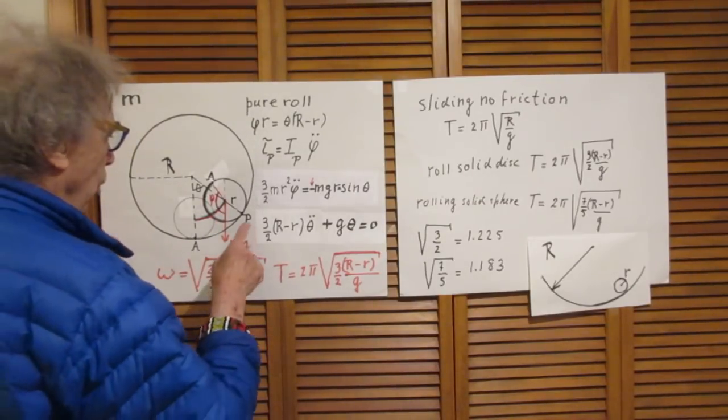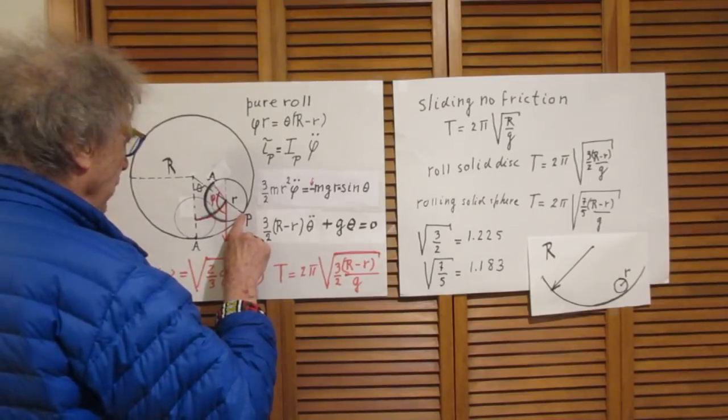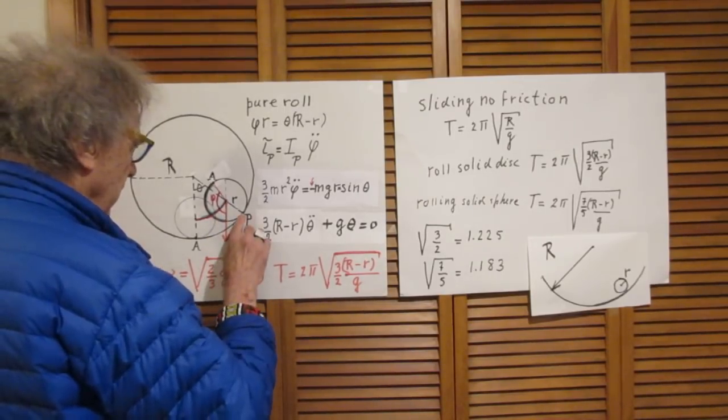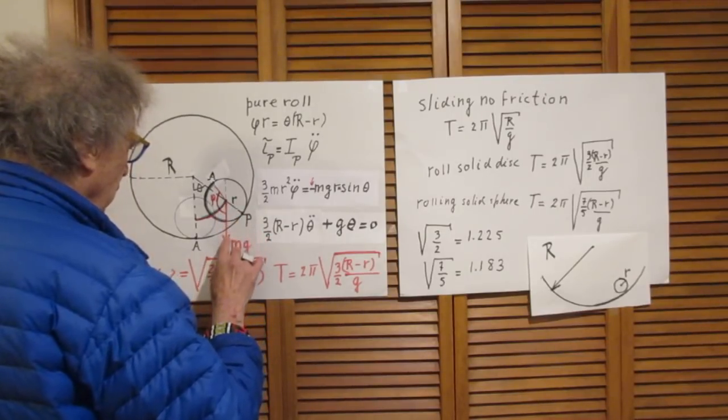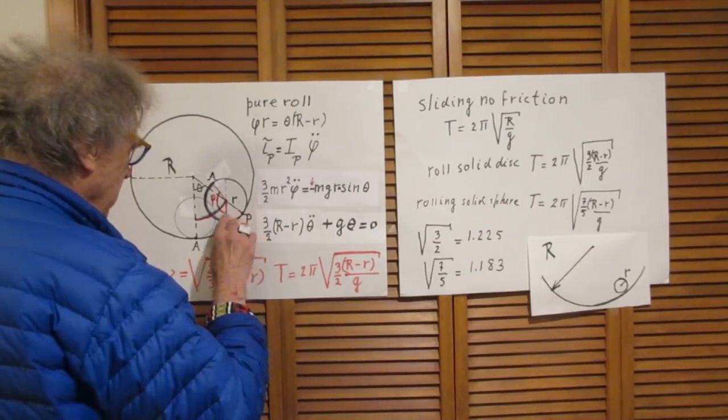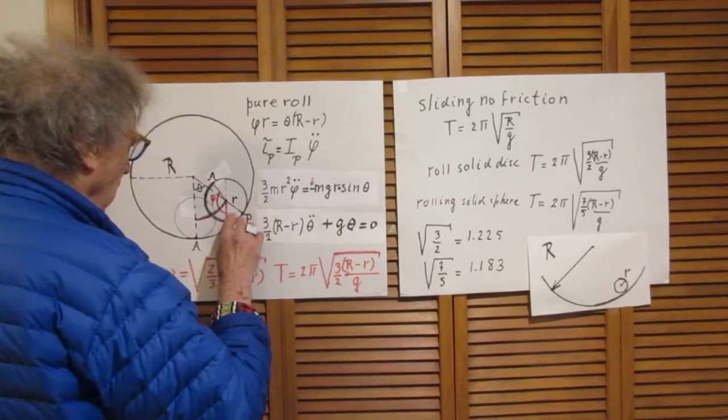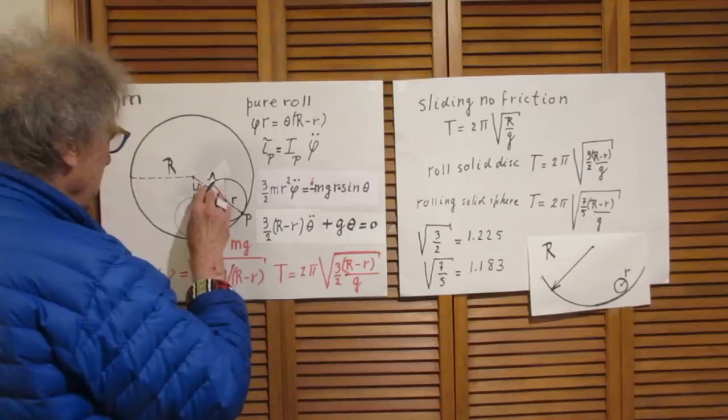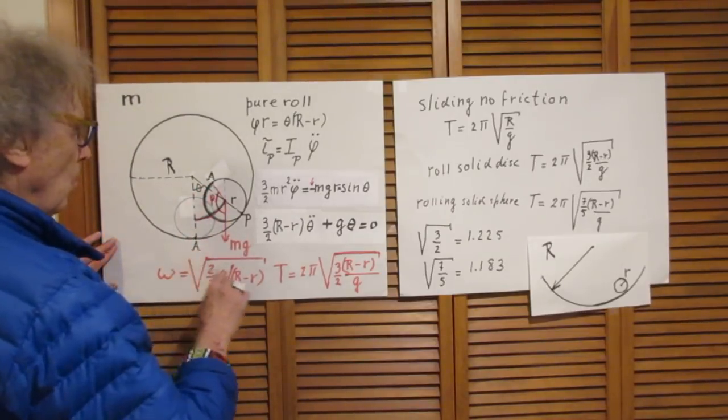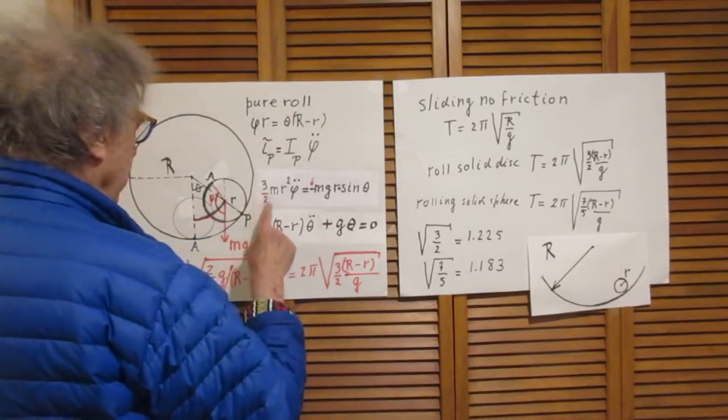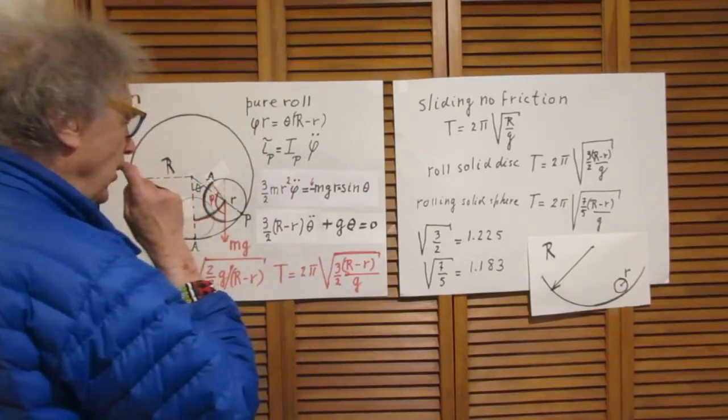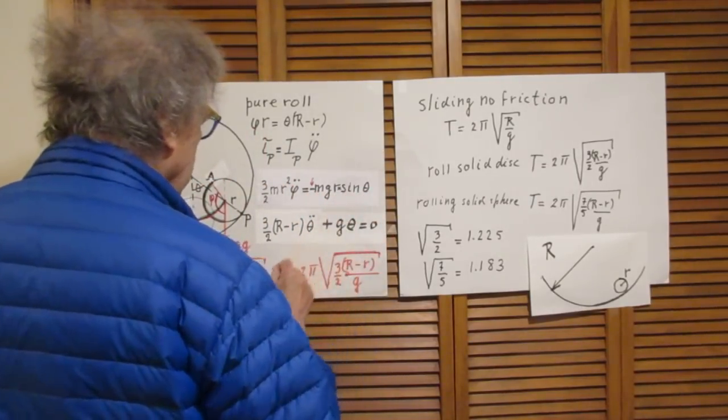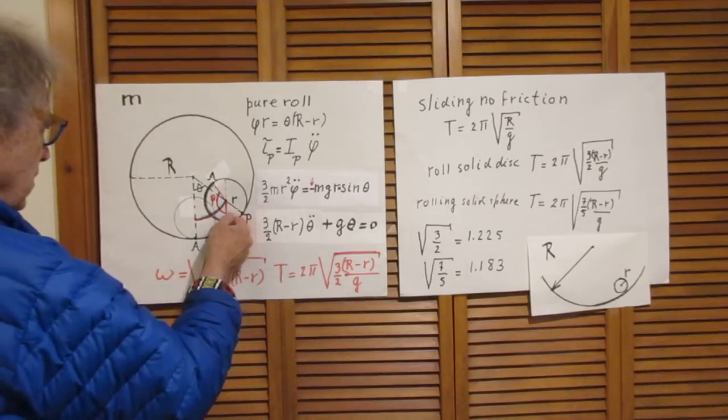The only force for which the torque is nonzero is mg. The magnitude is this force times the distance from p to this force, and that distance is r sin theta, because this angle is theta. So we see that 3 halves mr squared phi double dot equals minus mg times r times sin theta.